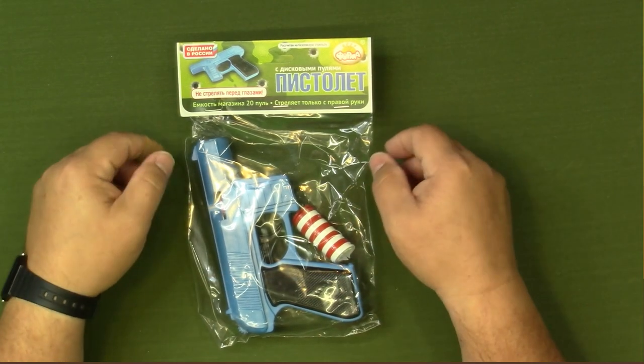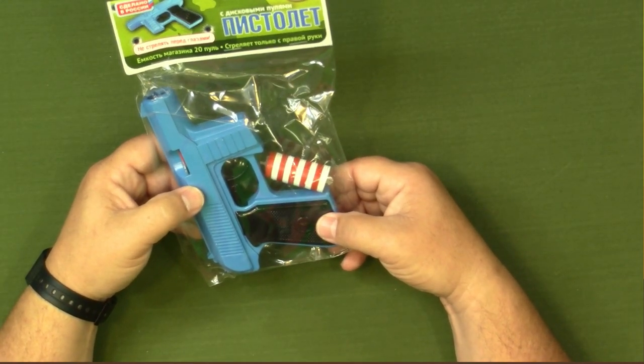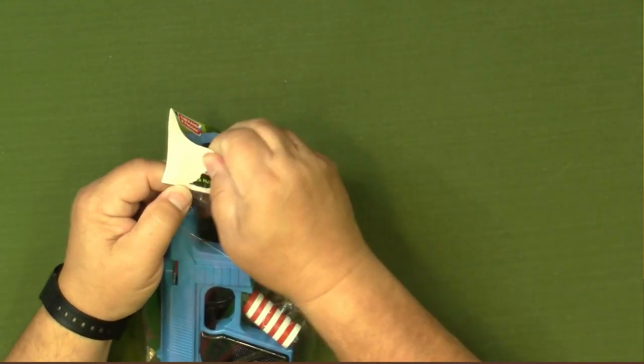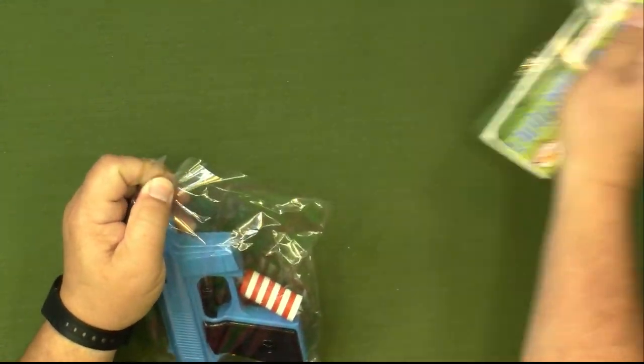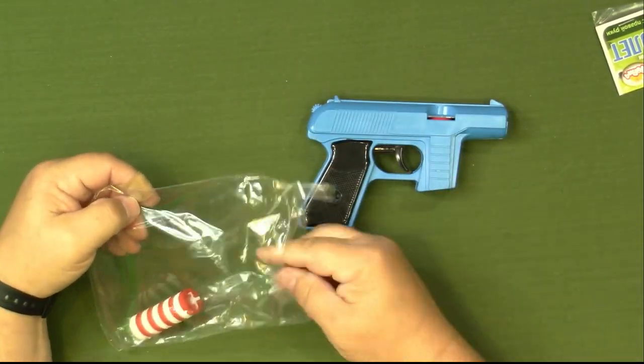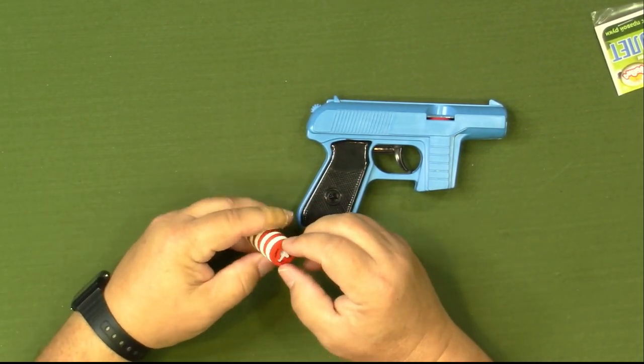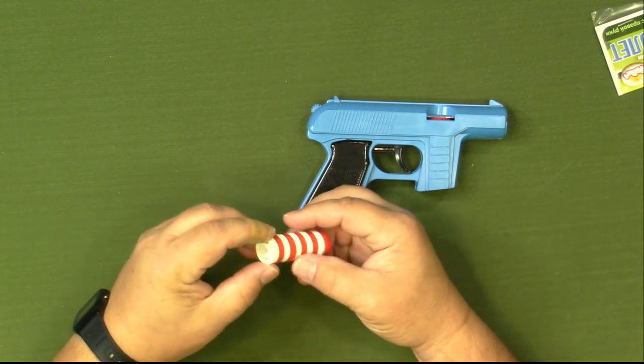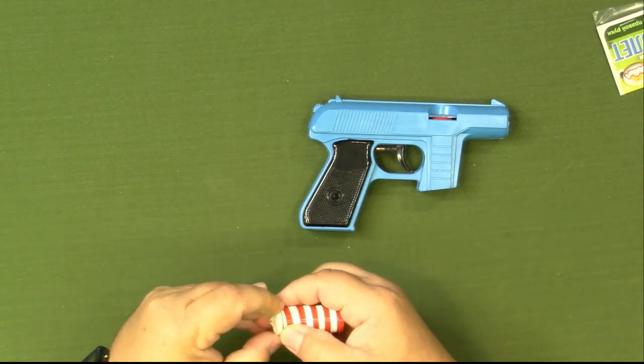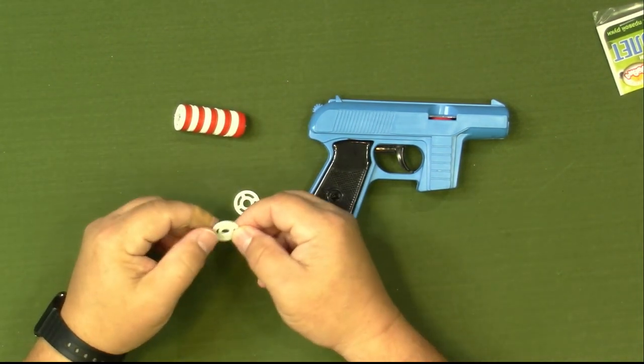And we have here today the Russian version of the Ray Plastic's jet disc, or the tracer gun. And so we'll go ahead and open it up here and see what we got. So inside we've got the gun itself. We have the jet discs. They're basically the same idea. They look a little different than what I remember.